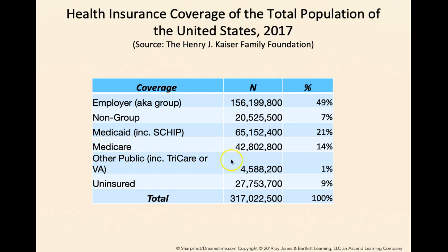That's followed by Medicare, which is for the elderly and those with certain forms of disabilities. About 1 percent is covered by other public coverages, including TRICARE or Veterans Affairs for the military. About 9 percent of the population — roughly 28 million Americans — do not have health coverage. This was greatly reduced after the Affordable Care Act. The gains fell on the non-group category, because most of these people got coverage through Obamacare.